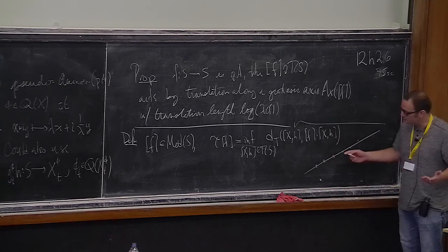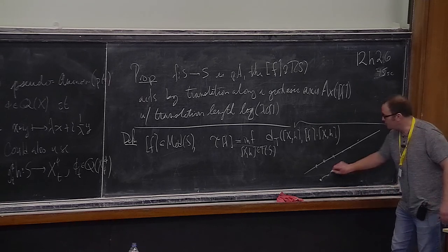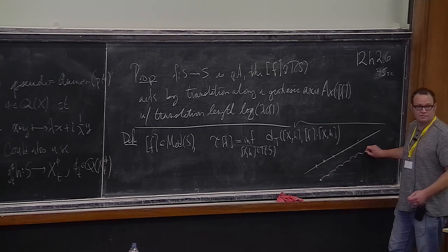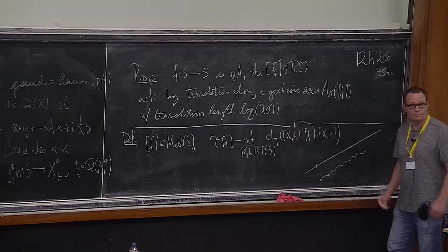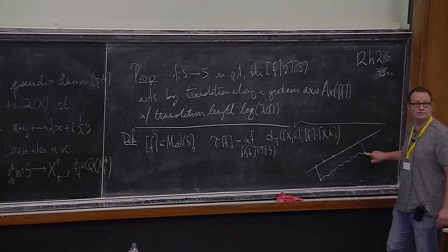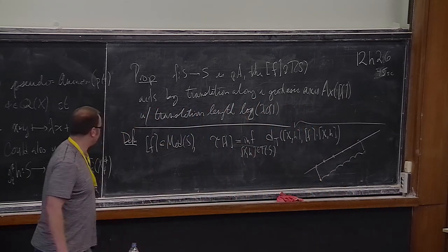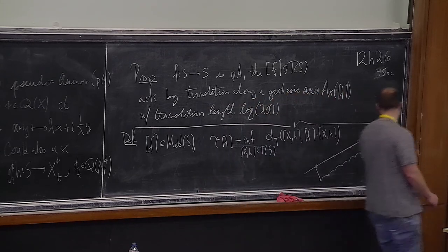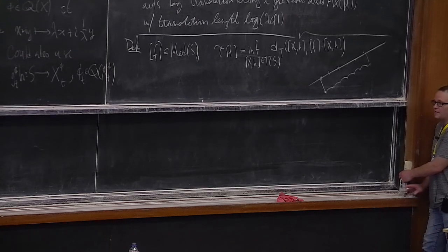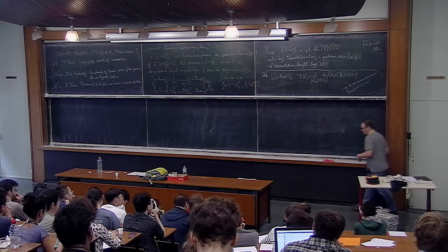For a pseudo-Anosov — I'll leave this as an exercise — we have this axis, and we're translating along that axis exactly by log lambda_F. If I take any other point and ask how far it moves, the exercise is that it has to move no less than log lambda_F. The hint: think about iterating. If a point moves some distance less than that, apply the triangle inequality, go k times, divide by k — and you get a contradiction.